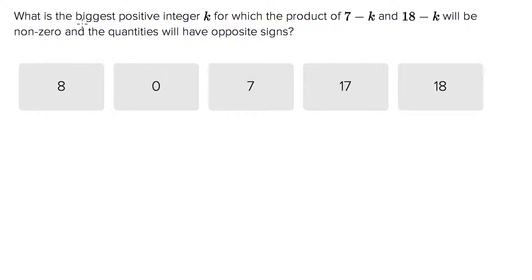This question has tons of rules in it. They want you to find the biggest positive integer for k, for which the product of this quantity and that quantity will be non-zero and the quantities will have opposite signs. So there's like one, two, three, four, five, six, seven rules that you need to apply here and we need to keep track of all of them.